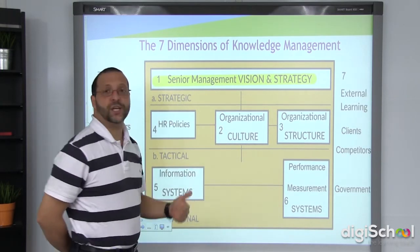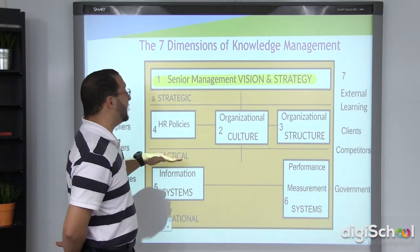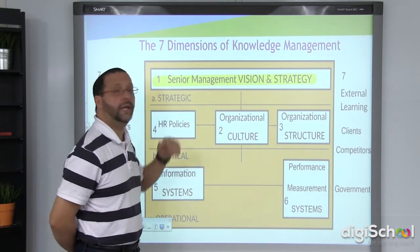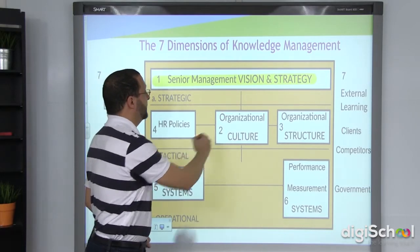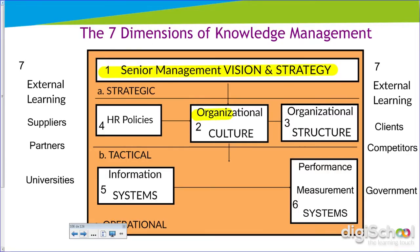That vision and strategy is supported by more tactical variables that are equally important. For example, that vision and strategy is determined by what are the values in that organization, the organization culture, how that organization is structured, what is the relationship between the people in the organization, and what are the recruiting and talent management policies of that organization.